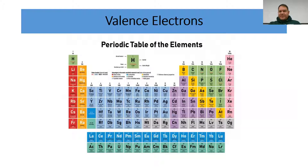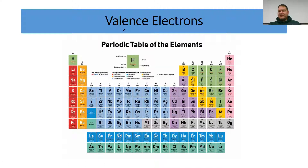Before we get into how we do that, I want to remind you about valence electrons, because it's very important that you can calculate the number of valence electrons for each element in the molecule we're drawing the Lewis structure for.